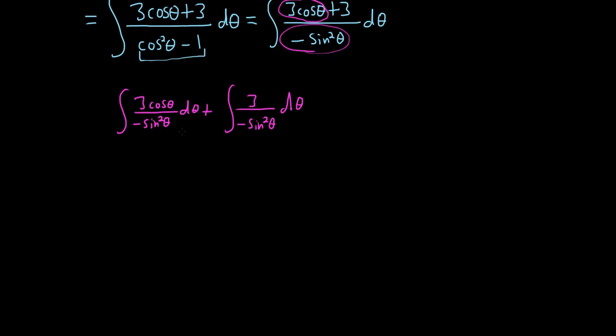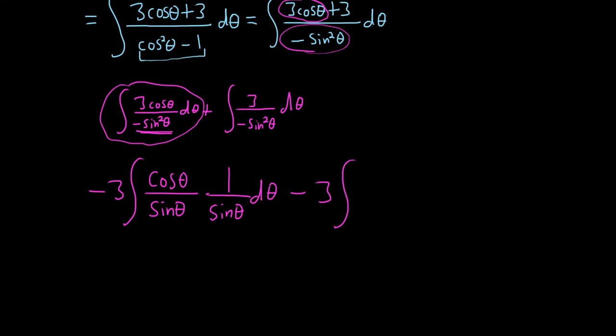Now we want to use some stuff we know from trig. So like cosine over sine is going to be cotangent. So if you look at the first integral, I'm going to pull out that negative 3. So it's negative 3. I'm going to write it like this: cosine over sine times 1 over sine. You can do that, because sine times sine is sine squared. That's what gives you the bottom. Then minus 3. And this 1 over sine squared, well, 1 over sine is cosecant. So this is cosecant squared theta d theta.